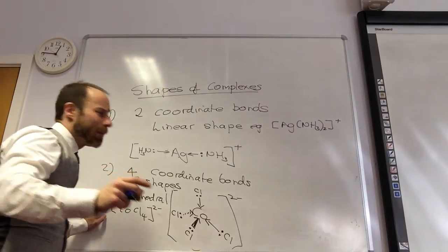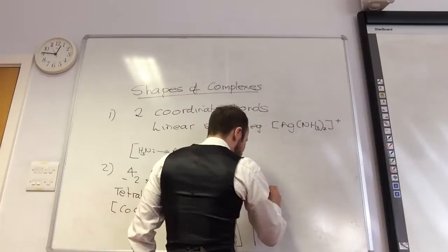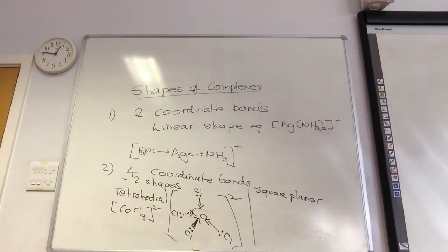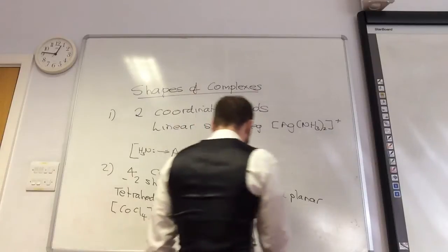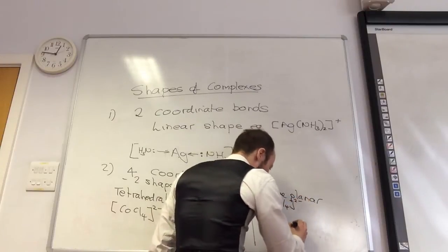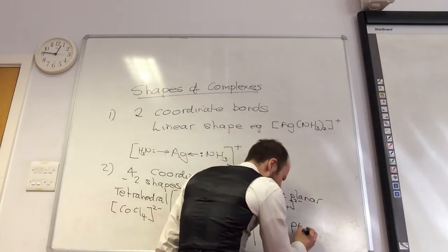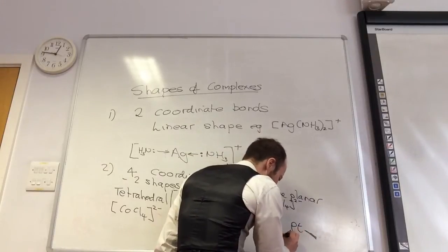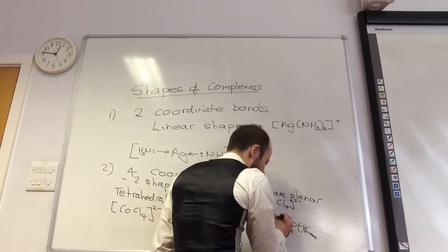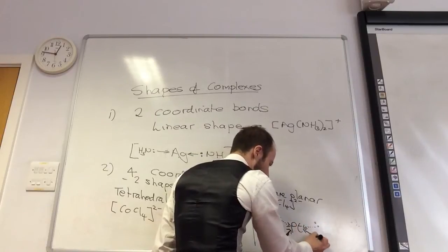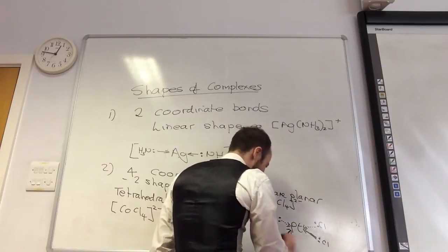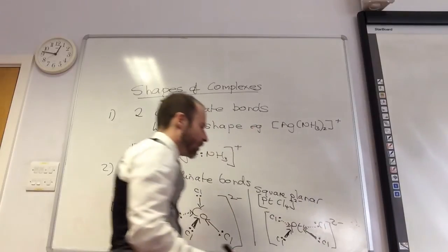The other shape four coordinate bonds can be is square planar. An example of that would be a platinum complex — platinum with four chlorides, two minus: [PtCl₄]²⁻. To draw square planar, you have two wedges coming out and two dashes going back. Put your arrow heads on, put your lone pairs on, and then put your ligands. Then that's two minus.